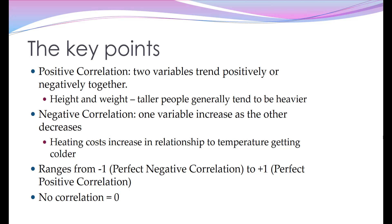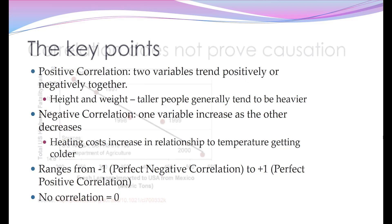So the range is from minus one, which would indicate a perfect negative correlation, to plus one, which would indicate a perfect positive correlation. If the value comes back as zero, it means there's absolutely no correlation at all.